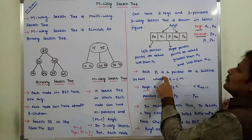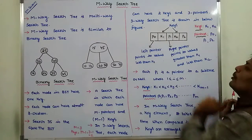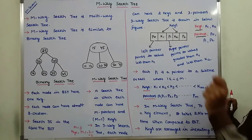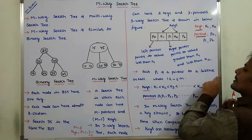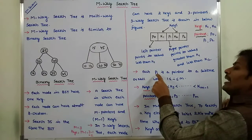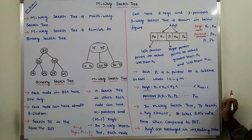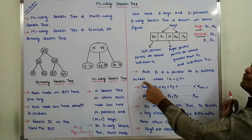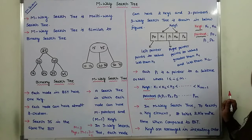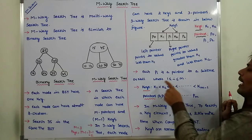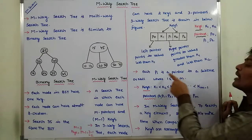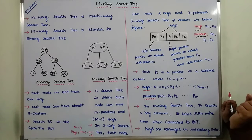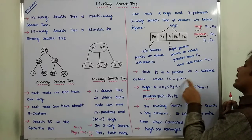Each PI is a pointer to a subtree or null — if that subtree is empty, then it can be represented as null — where 1 less than or equal to I less than or equal to M. There are M pointers. In the 3-way search tree, M equals 3, so there are 3 pointers: P1, P2, P3. If we start from 0, then there are M minus 1 pointers.